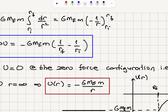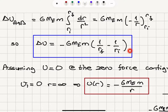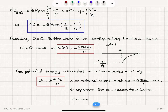G M_e times m goes out, so we have the integral of dr over r squared, which is minus 1 over r, evaluated between r initial and r final. We find that the change in potential energy is minus G M_e m times the quantity 1 over r final minus 1 over r initial, which simplifies to G M_e m times the quantity 1 over r initial minus 1 over r final. So we can calculate the change in potential energy of the system when we move this object from point A to point B.